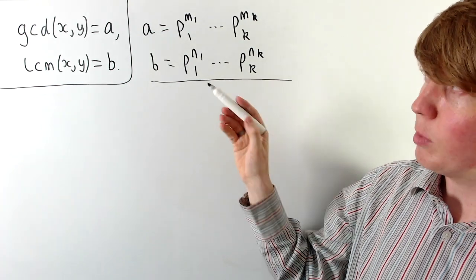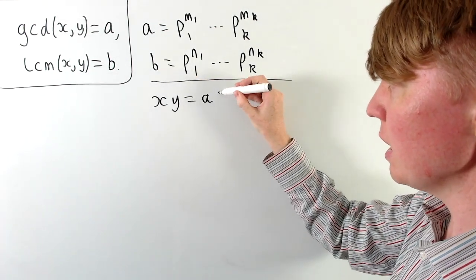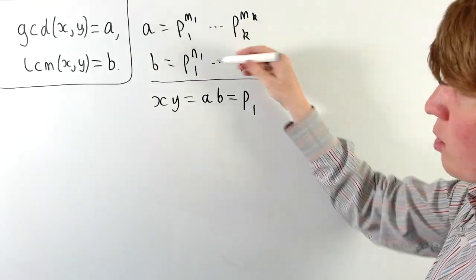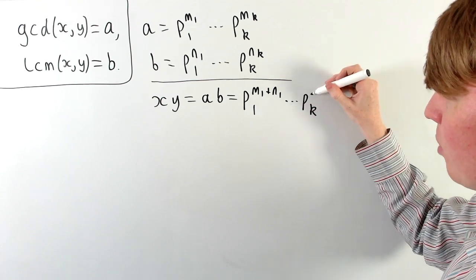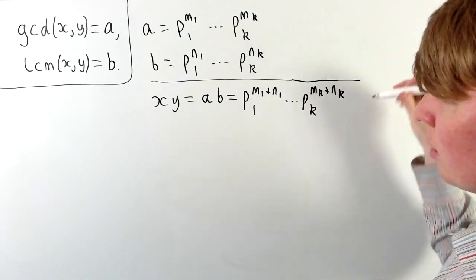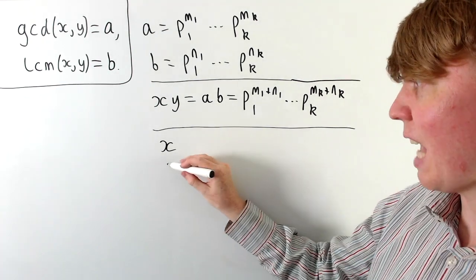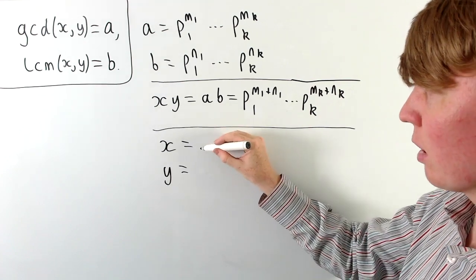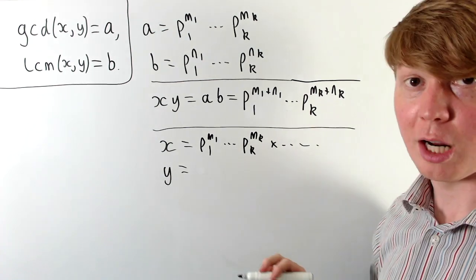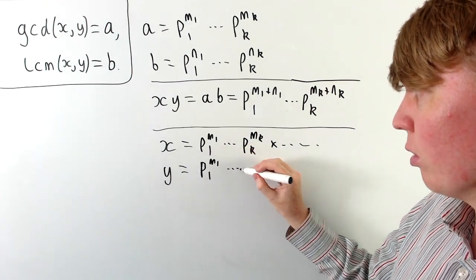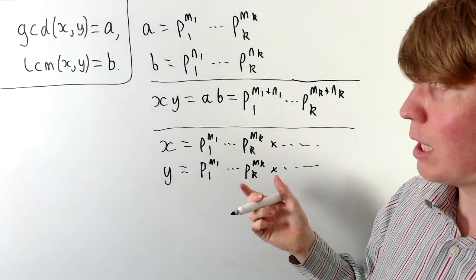Since x times y must equal the GCD times the LCM, we have x times y equals a times b, which in prime factorisation is p1 to the power m1 plus n1, multiplied up to pk to the power mk plus nk. Since a is a common divisor of both x and y, both x and y must each contain p1 to the m1 through pk to the mk in their prime factorisations, potentially multiplied by additional prime factors.